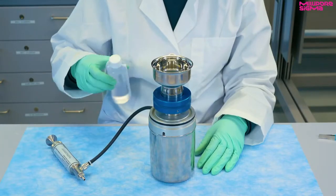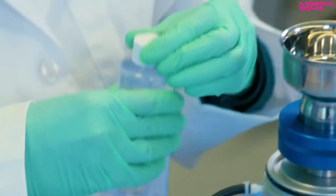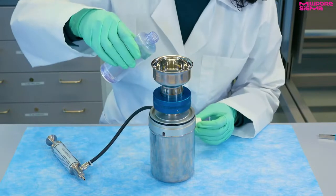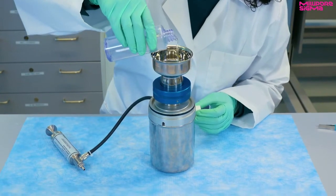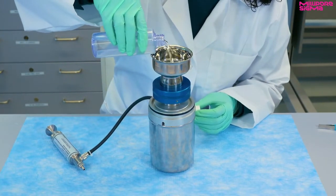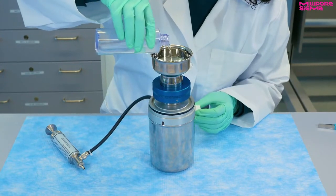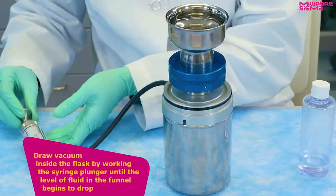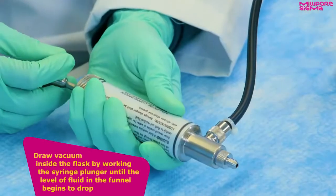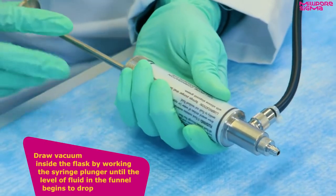To filter the test sample, first shake the sample bottle and empty the contents into the funnel by pouring against the funnel walls to distribute the fluid evenly over the surface of the filter. Next, draw vacuum inside the flask by working the syringe plunger until the level of the fluid in the funnel begins to drop.